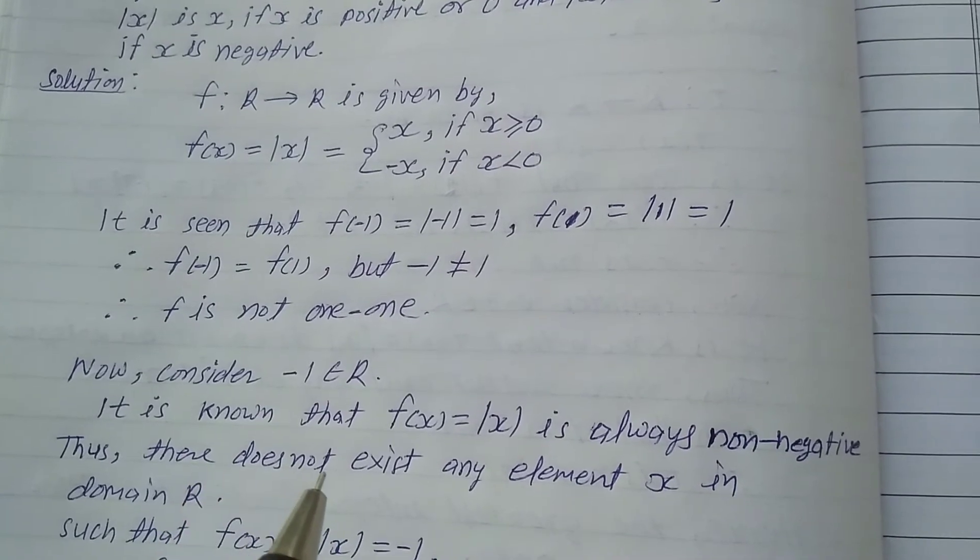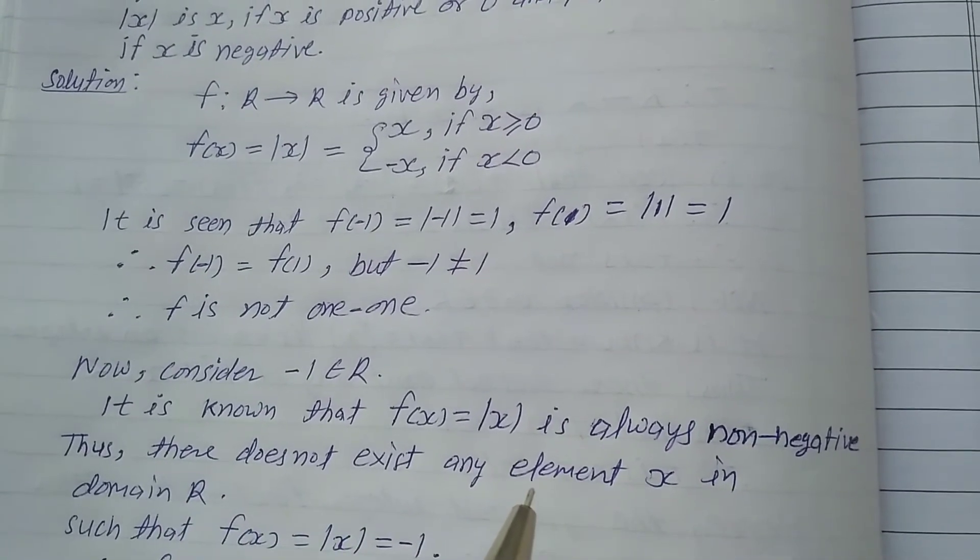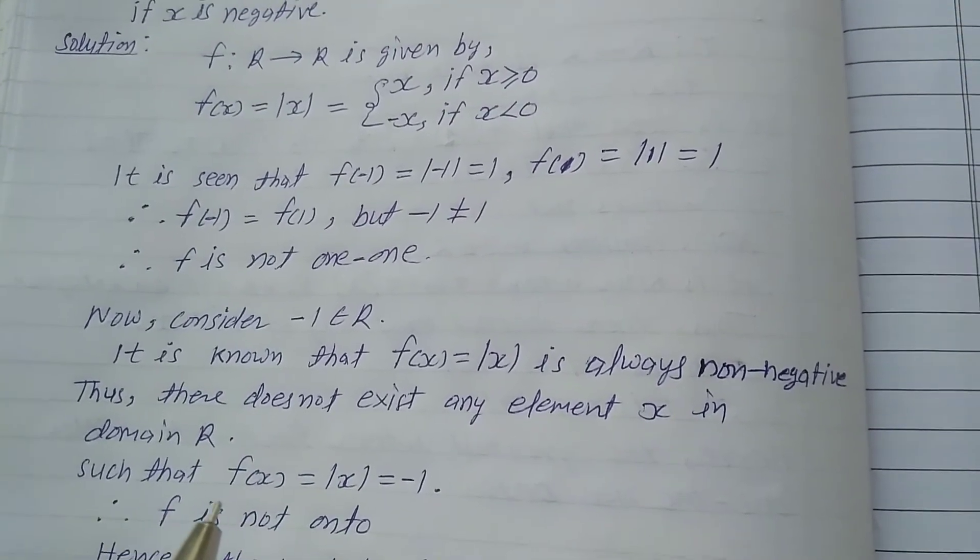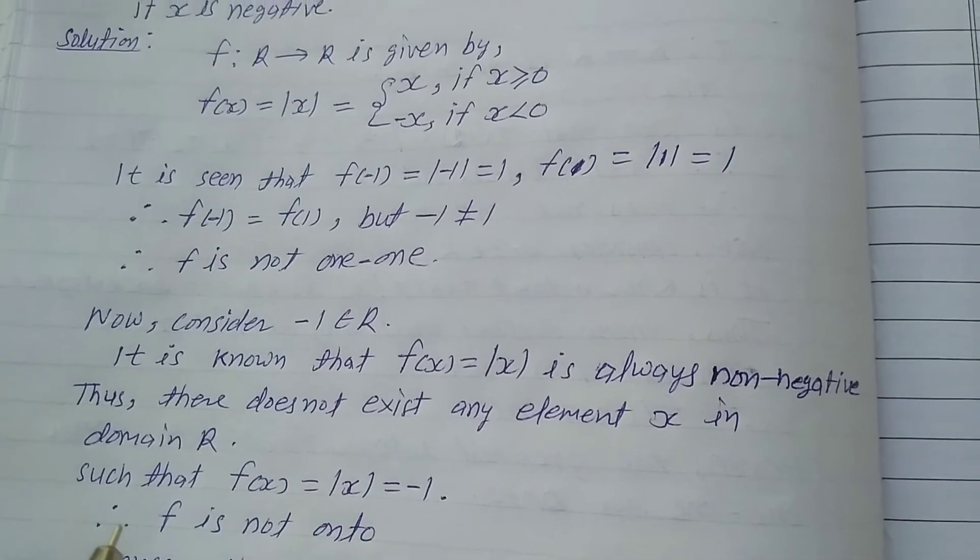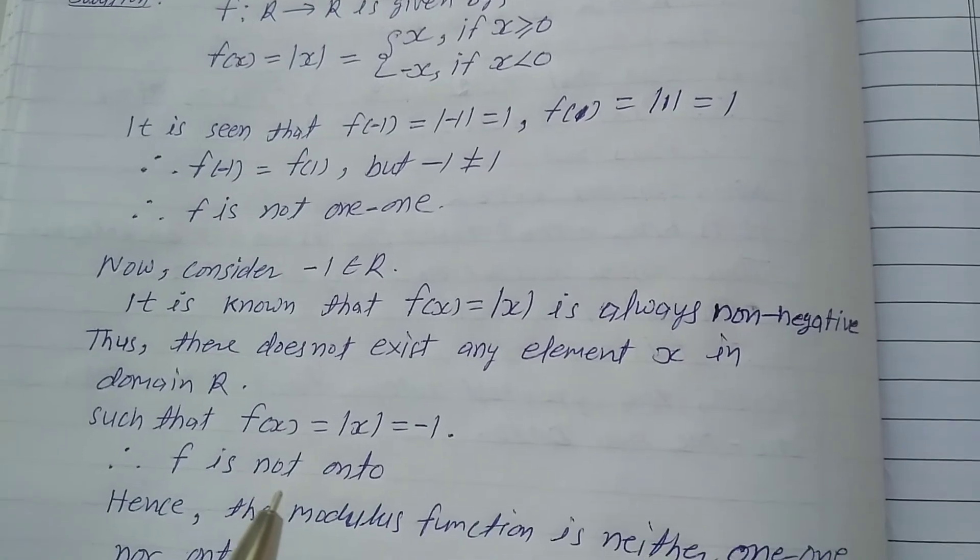Thus there does not exist any element x in domain R such that f(x) = |x| = -1. Therefore f is not onto.